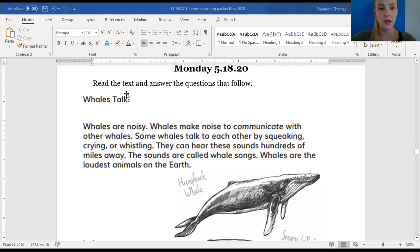My turn first. Whales talk. Wait a second. I see an exclamation point right here. However, I should say it like this, whales talk! Whales are noisy. Here's my topic sentence. This is going to tell me that I think I'm about to read all about the different noises that whales can make. Whales are noisy. Whales make noise to communicate. I was right. With other whales, some whales talk to each other by squeaking, crying, or whistling. They can hear these sounds hundreds of miles away. The sounds are called whale songs.